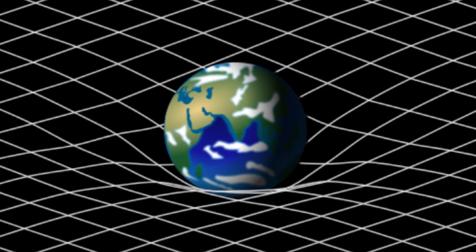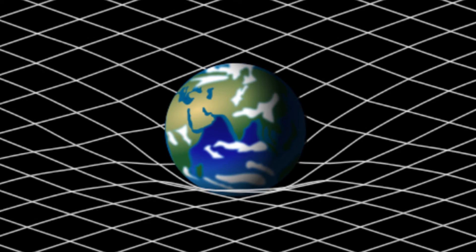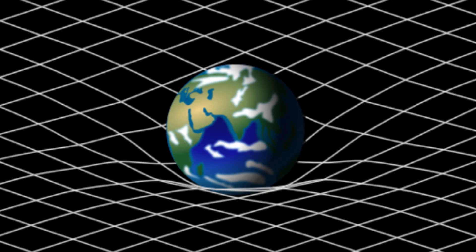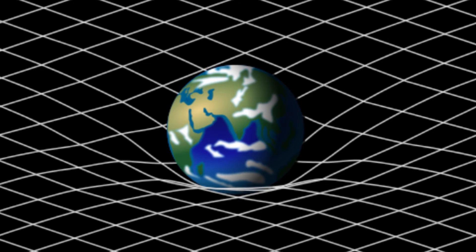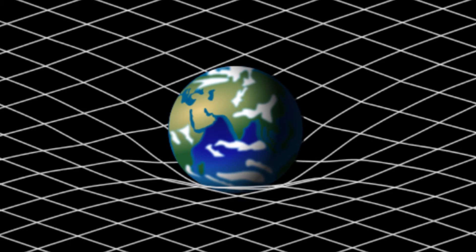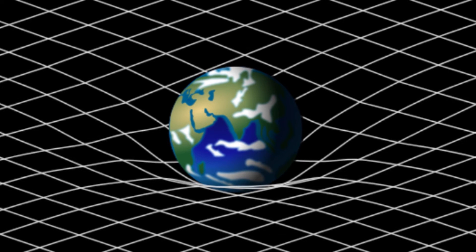In space-time, a coordinate grid that spans the 3 plus 1 dimensions locates events, rather than just points in space. That is, time is added as another dimension to the coordinate grid. This way the coordinates specify where and when events occur.